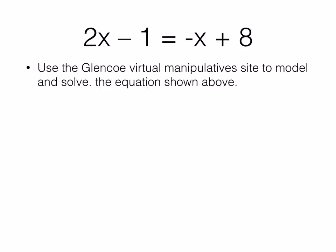Here we have another equation. 2x minus 1 equals negative x plus 8. I'm going to ask you to pause this video and go ahead and check out the virtual manipulative site from Glencoe, set up your equation, and do some balancing until you find the value of 1x, and that will be the solution.